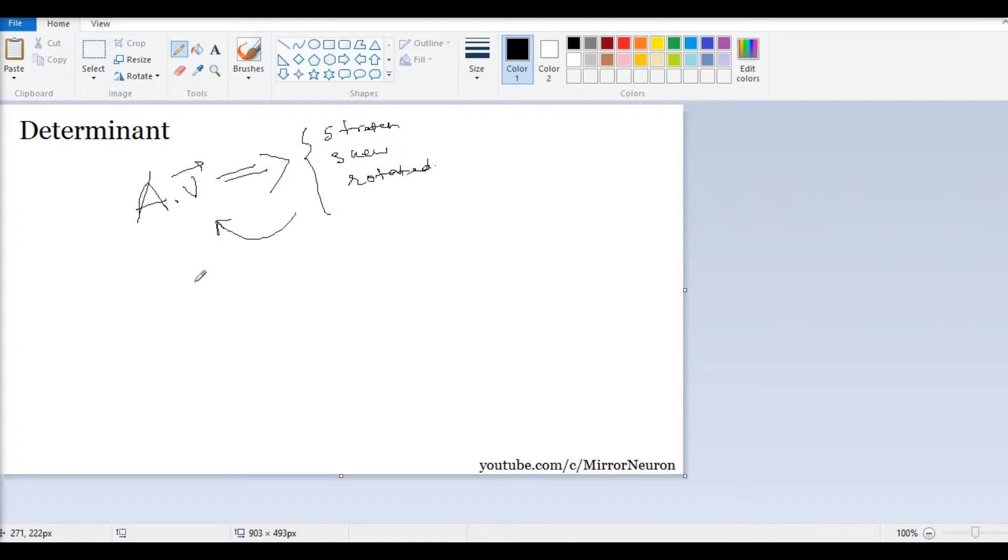Now determinant, which is the multiplication factor, actually tells us whether it is possible or not. Because we saw an example where it was a square earlier, and then it got transformed into a straight line.